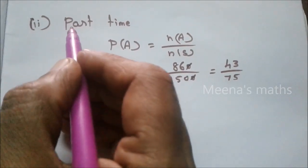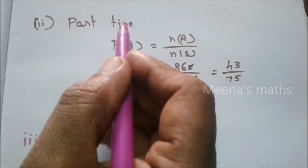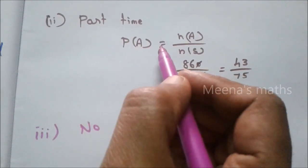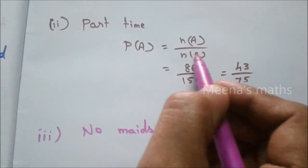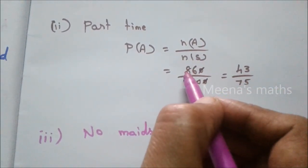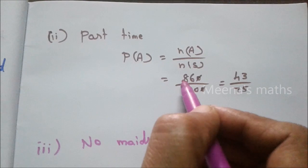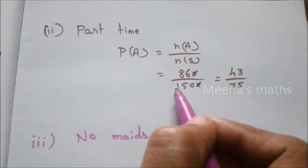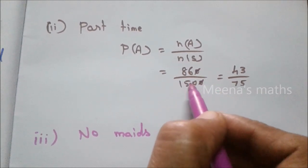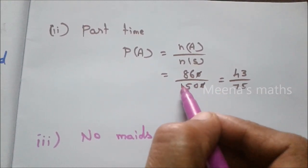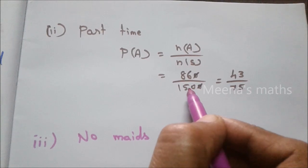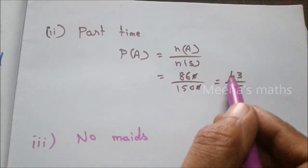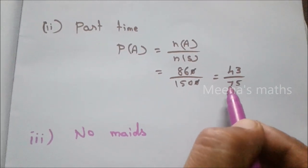Question 2: Find the probability of families having part-time helpers. P of A equals N of A by N of S. N of A equals 860. So probability equals 860 by 1500, which simplifies to 43 by 75.